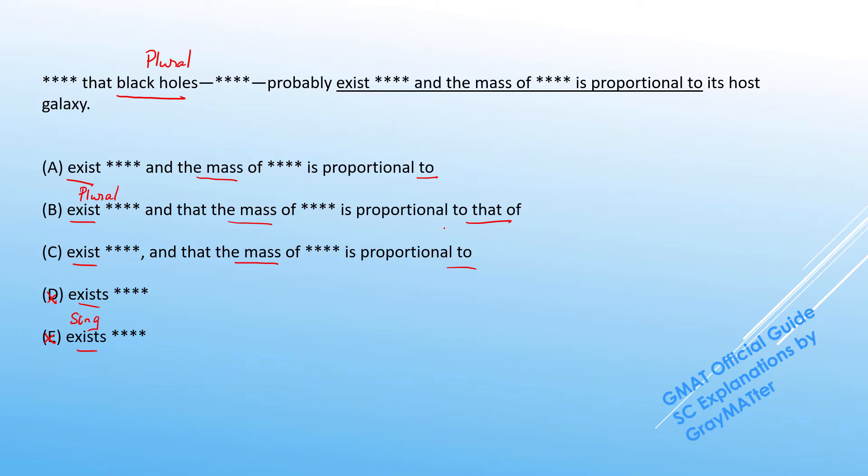A and C's logic reads that the mass is proportional to the host galaxy, whereas in B we have this pronoun that which is obviously referring to the mass itself. So this would read that the mass of the black hole is proportional to the mass of the host galaxy.